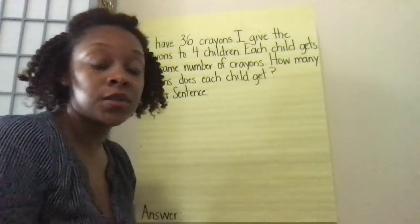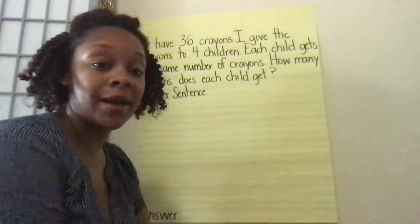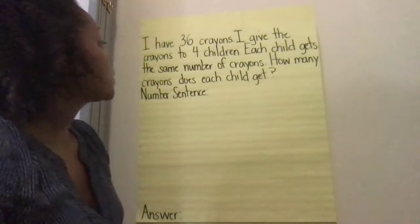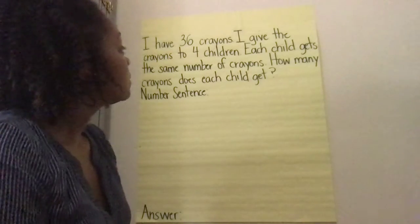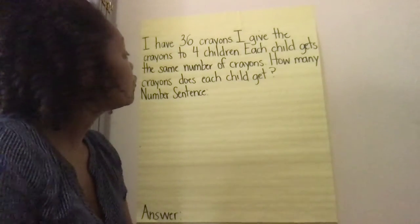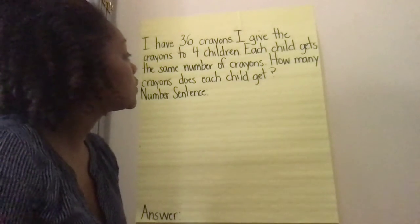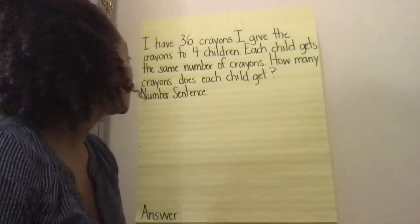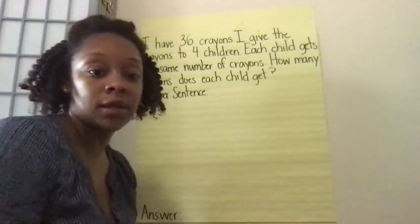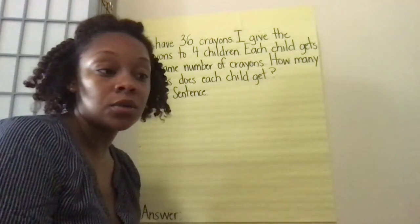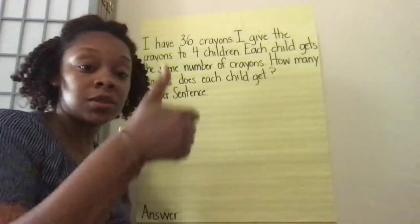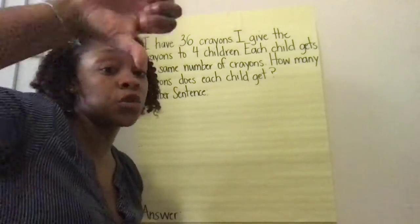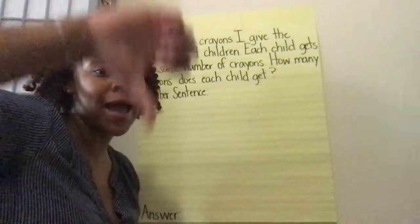During my first read, you're asking yourself: is there an action? I have 36 crayons. I give the crayons to four children. Each child gets the same number of crayons. How many crayons does each child get? So during that first read, was there an action — thumbs up or thumbs down? Good, there was no action.